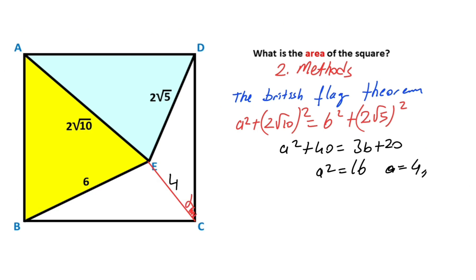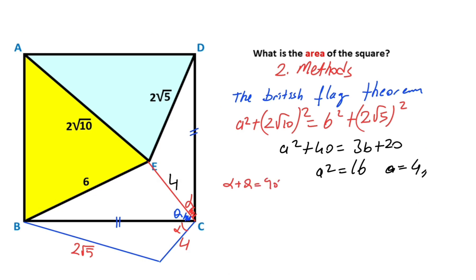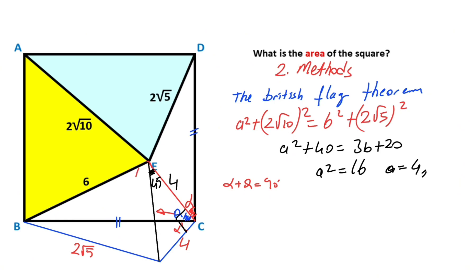Let's call these angles alpha and theta. We know these two sides are equal, and if we move this triangle to the bottom side of the square, we get alpha again, with length 4 and 2√5. Since alpha + theta = 90°, the combined angle here equals 90°. Connecting the two corners, this angle must equal 45°, so the side opposite 90° equals 4√2.